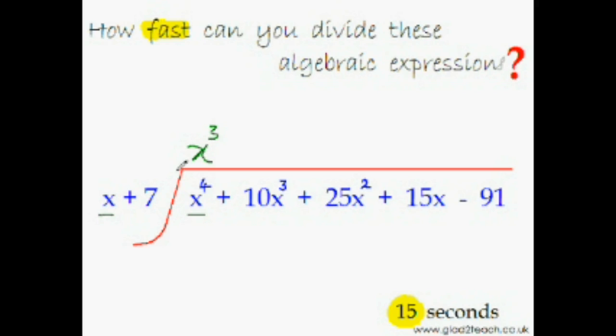x^4 divided by x is x^3. Minus 7x^3 plus 10x^3 is plus 3x^2, and we get the second term of the answer. Now minus 21x^2 plus 25x^2 would be plus 4x, and this is the third term of the answer.